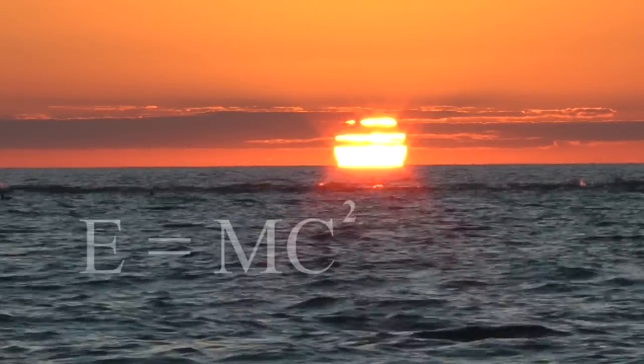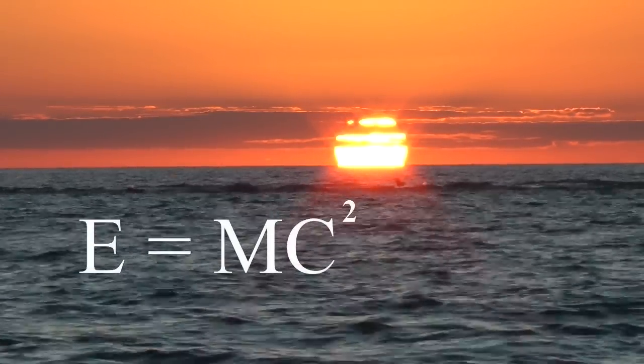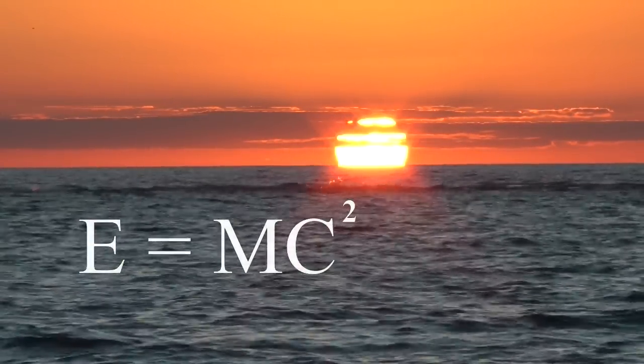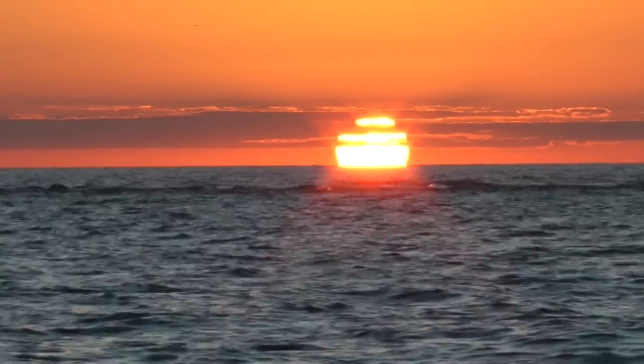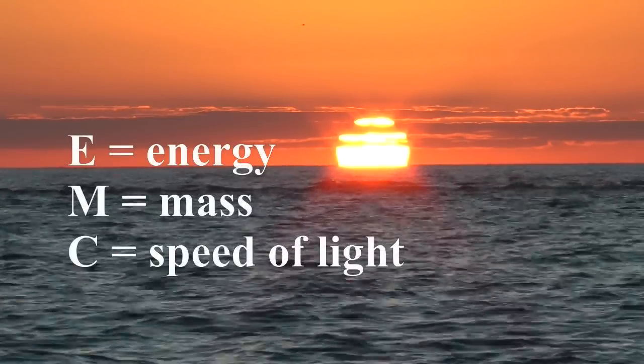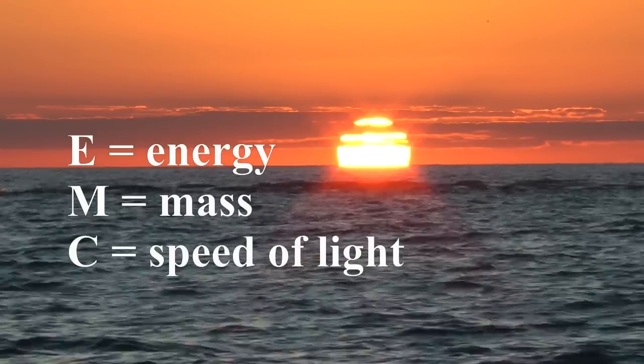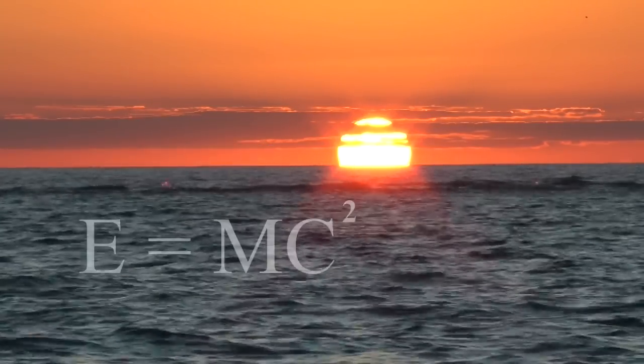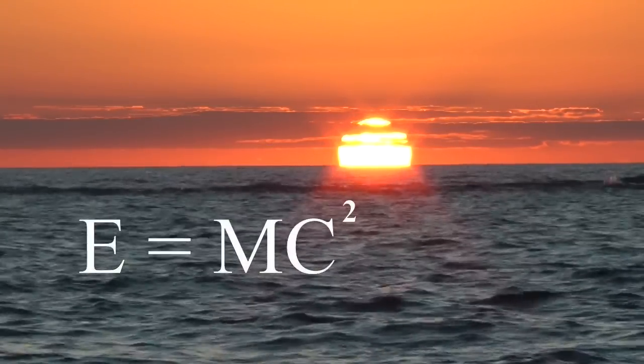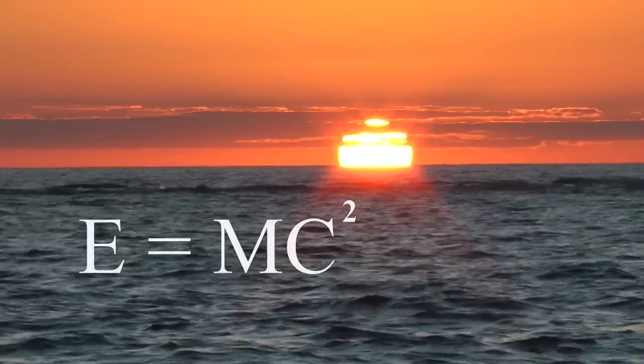Albert Einstein's famous equation, E equals MC squared, reveals a relationship between energy and matter. E represents energy, M is mass, and C the speed of light. This formula tells us that mass, what we commonly call matter, can be converted to energy.